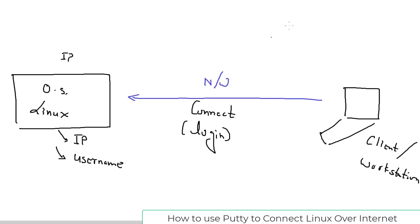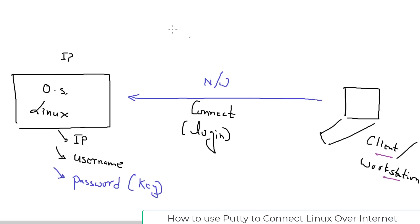Obviously if you're logging into something you always have to authenticate, and for this you need a password. But as I mentioned in the last video, when we launched this instance, instead of a password we have a key that we already downloaded. The point is how can we log in — our system is known as the client — and one very commonly used standard tool in the market is PuTTY, which we use for remote login.